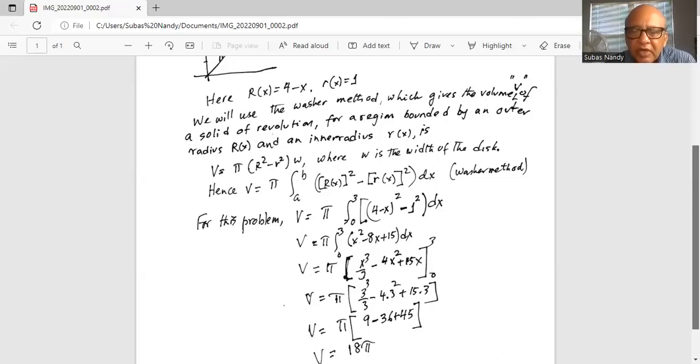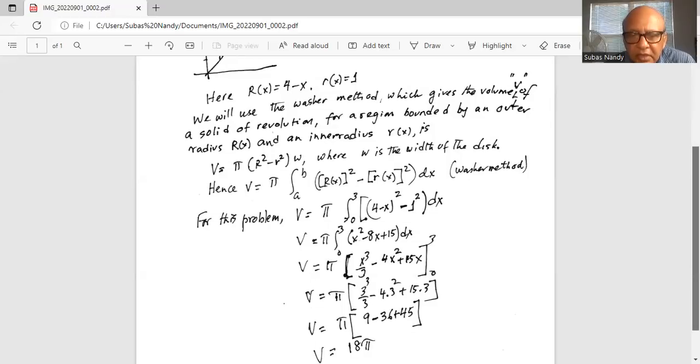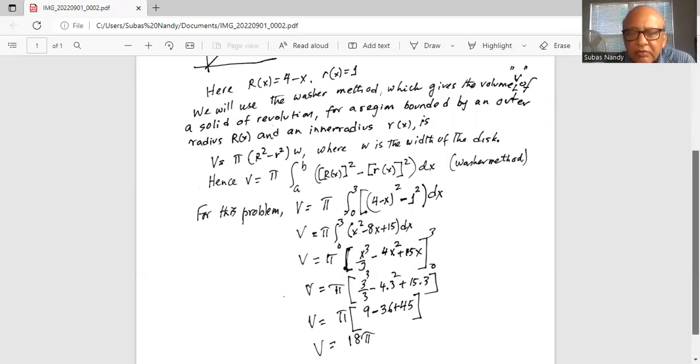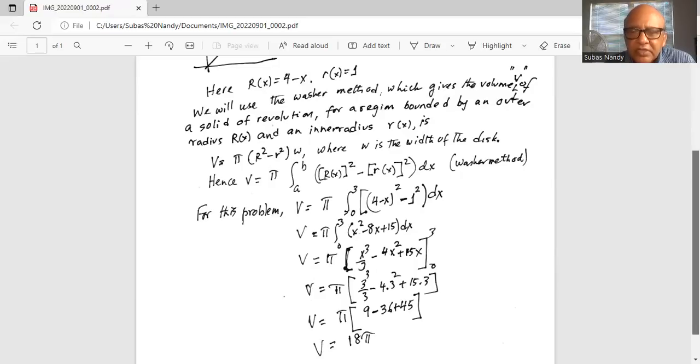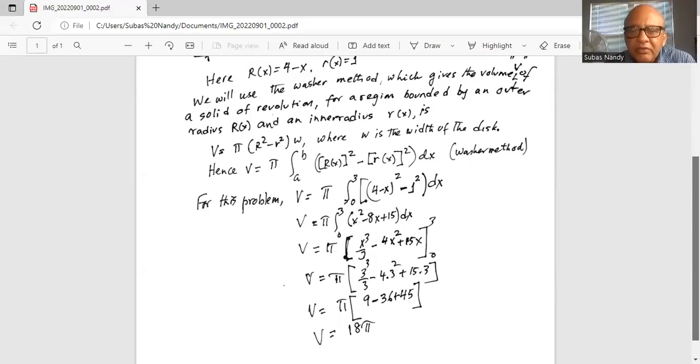So 9 plus 45 is 54 minus 36 is 54 minus 36, 54 minus 36 is 18.